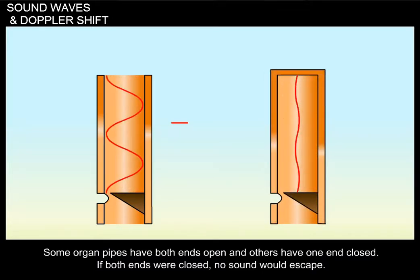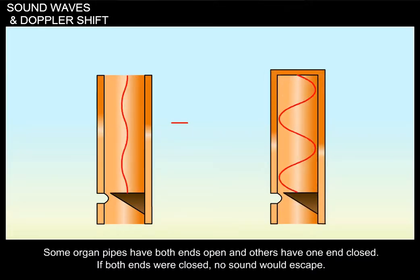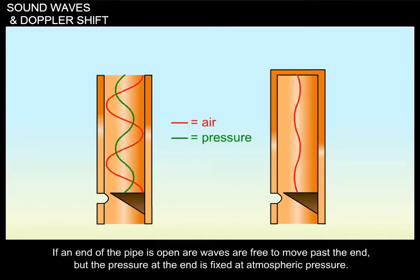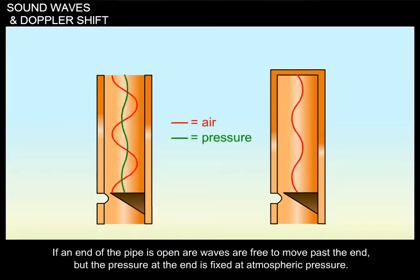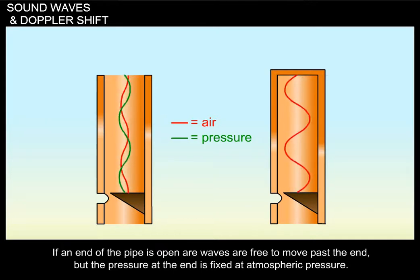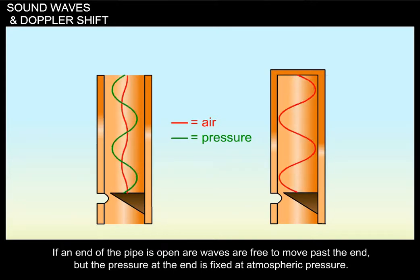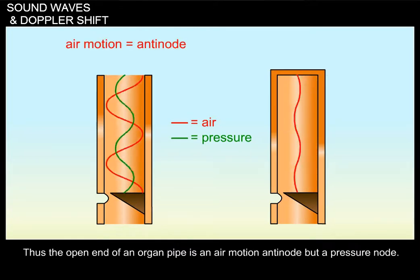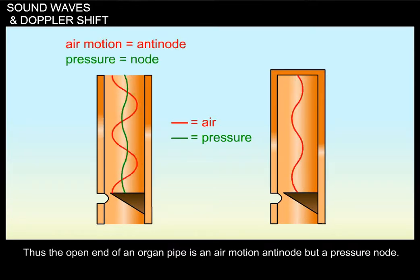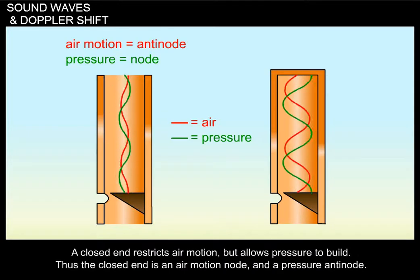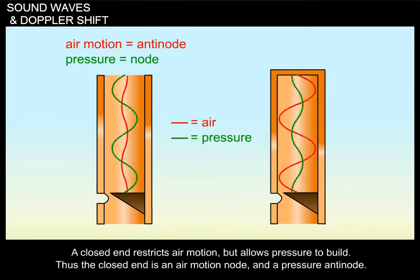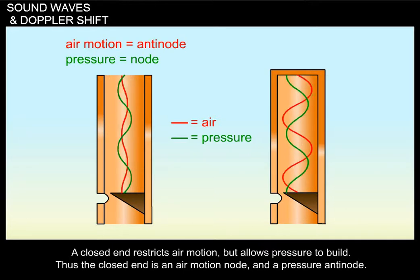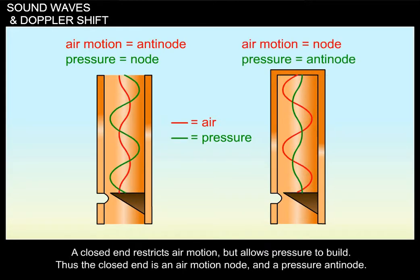If both ends were closed, no sound would escape. If an end of the pipe is open, waves are free to move past the end, but the pressure at the end is fixed at atmospheric pressure. Thus, the open end of an organ pipe is an air motion antinode, but a pressure node. A closed end restricts air motion but allows pressure to build. Thus, the closed end is an air motion node and a pressure antinode.